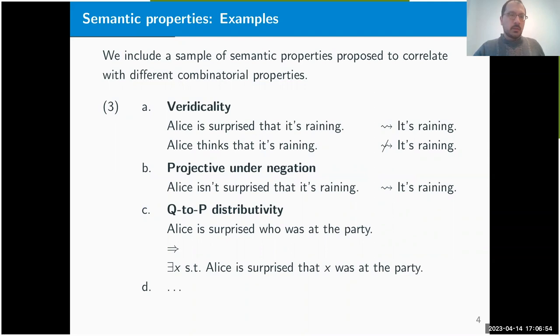A sample of the semantic properties that we included in our database is illustrated on this slide. We included things like veridicality—this is the property for an attitude verb to entail its declarative complement. For example, 'Alice is surprised that it's raining' implies that it's raining, whereas 'Alice thinks that it's raining' does not imply that it's raining.